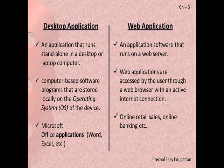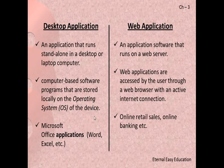What is a desktop application? An application that runs standalone on a desktop or laptop computer is called a desktop application. These are computer-based software programs stored locally on the operating system of the device. For example, Microsoft Office applications like Word and Excel. Simply, when you open the computer and press the start button, the programs listed under 'All Programs' are desktop applications.